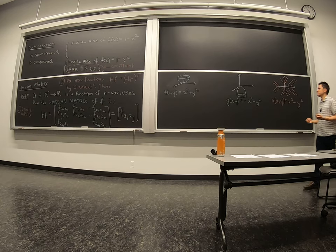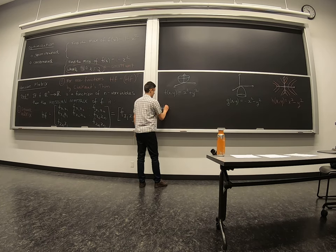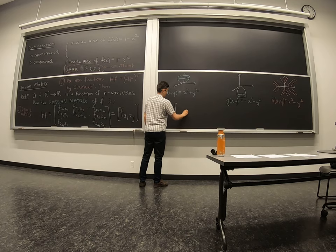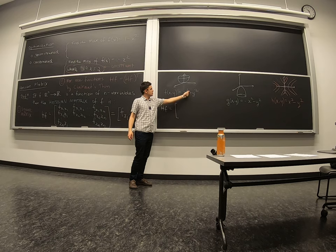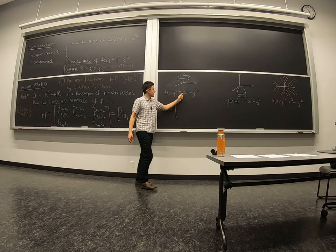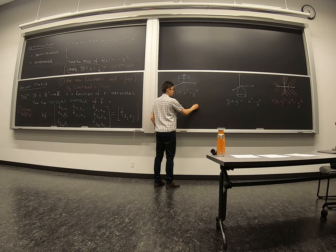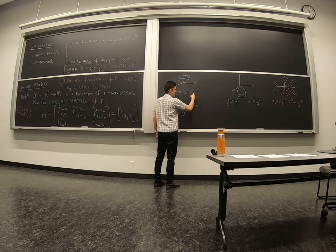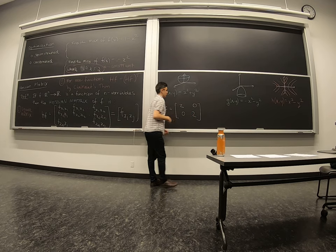And the Hessian matrices of these guys are very important. So if we take two derivatives in x here, we'll get a 2. There are no x times y terms, so we'll get zeros. If we take two derivatives in y, we'll get a 2.